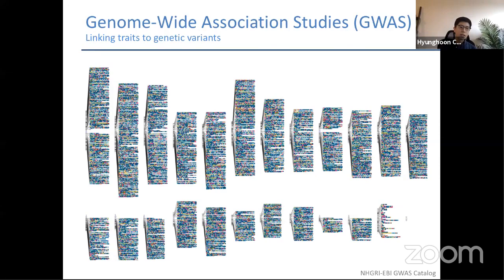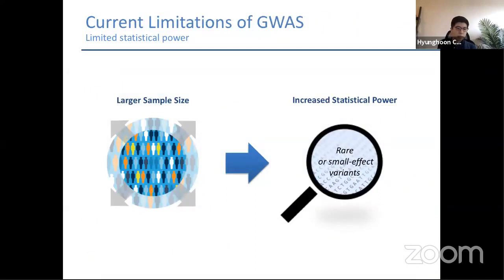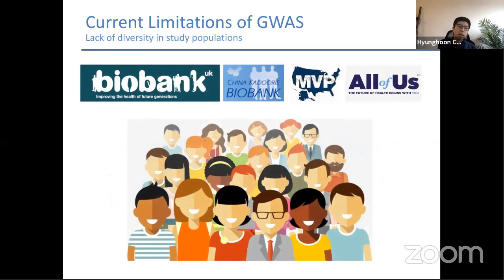A common analytic pipeline widely used in genetics is genome-wide association studies, or GWAS. The goal is to look for genetic variants that are statistically correlated with a phenotype of interest, such as disease status. We now have more than 3,000 publications on GWAS covering 60,000 unique associations across a wide range of phenotypes, including neurological disorders like Alzheimer's disease and complex traits like height. However, we're still yet to reach the full potential of GWAS — one limitation is statistical power, as some genetic signals are too rare or weak to detect and require even larger sample sizes.